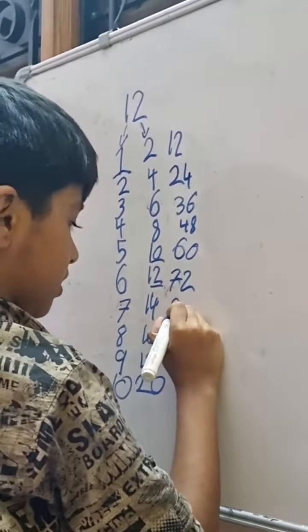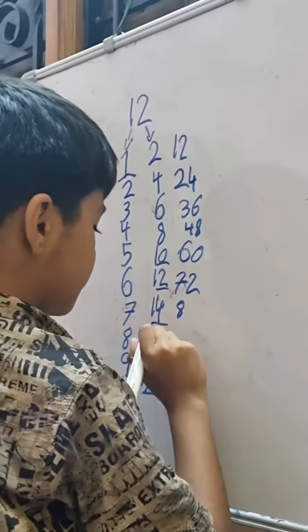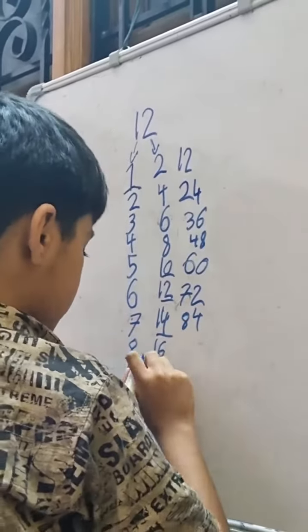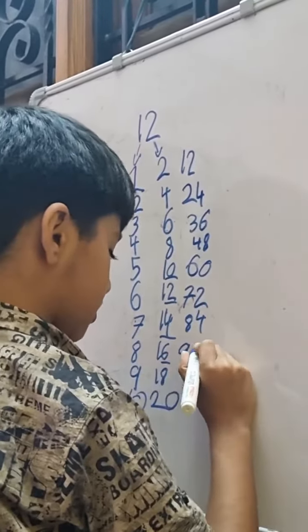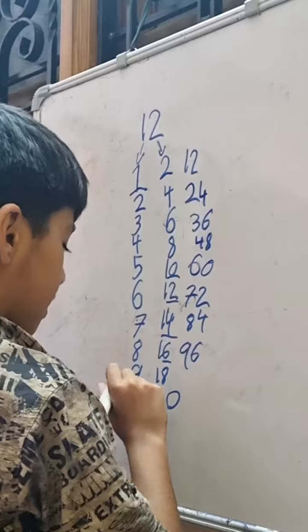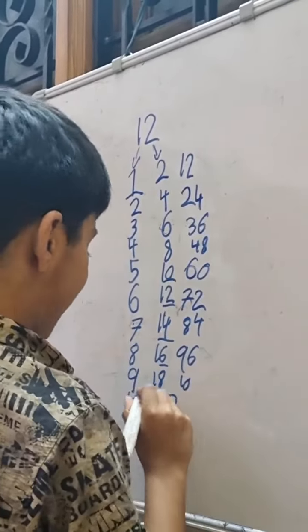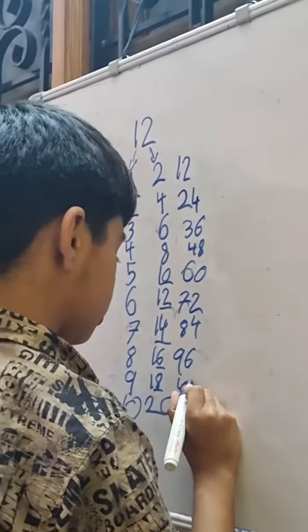7 plus 1 equals 8, and 4 is left, so we'll write 84. 8 plus 1 equals 9, and 6 is left, so we'll write 96. 9 plus 1 equals 10, and 8 is left, so we'll write 108.